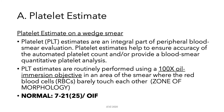Let's take a closer look at platelet estimates. Platelet estimates should be done on a wedge smear. This is an integral part of any peripheral blood smear evaluation and can help ensure the accuracy of the automated platelet count, or provide a quantitative platelet analysis. The platelet estimate is performed using the 100x oil immersion objective in the zone of morphology, and normally you would see a range of 7 to 25 platelets per oil immersion field.